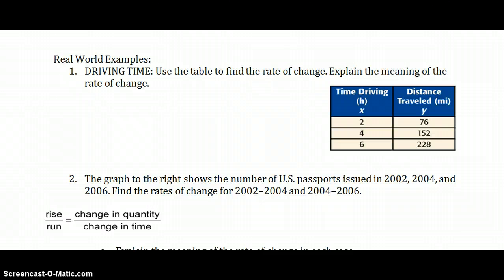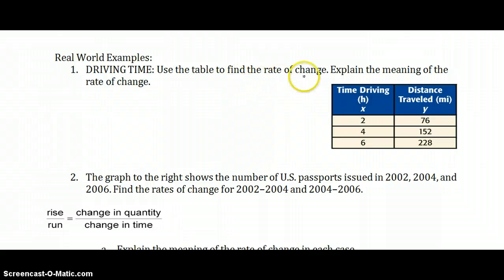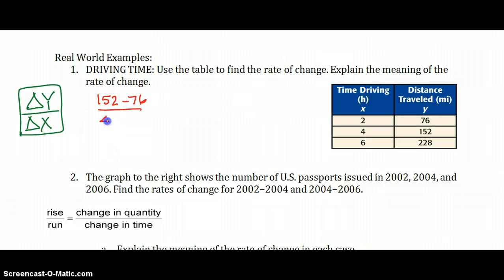Let's start with some real world examples. Using this table, it says, find the rate of change. Then it asks us to explain the meaning of the rate of change. And this is talking about driving time. So let's look at our table. It looks like x is our hours and time. And it's every two hours they've recorded the distance that they traveled. So let's look for the rate of change. Remember that formula. It's the change in y over the change in x. I always like to write this down to remind myself to put the y on top. So my y's here, if I check, we'll keep it positive. Let's do 152 minus 76. I just picked two of the y's. 152 corresponds with 4. They are an ordered pair. 152 minus 2. So when we subtract those, 76 over 2 simplifies to 38 over 1.